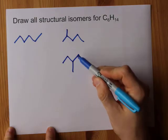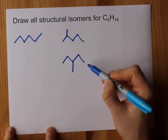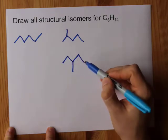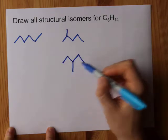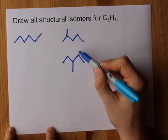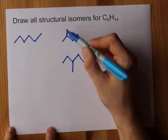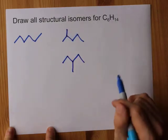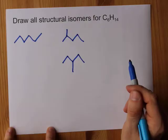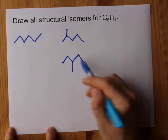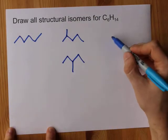Putting it on carbon four would mean that I had to number from the other side — one, two. Putting it there would be the same as putting it here because of symmetry. So this is actually it for my pentane options.